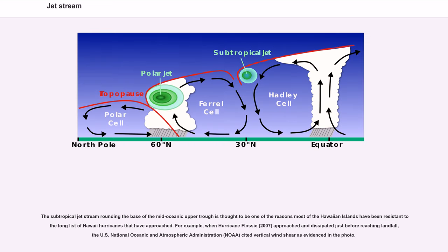The subtropical jet stream rounding the base of the mid-oceanic upper trough is thought to be one of the reasons most of the Hawaiian islands have been resistant to a long list of Hawaii hurricanes that have approached. For example, when Hurricane Flossie 2007 approached and dissipated just before reaching landfall, the U.S. National Oceanic and Atmospheric Administration (NOAA) cited vertical wind shear as evidenced in the photo.